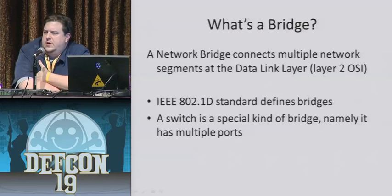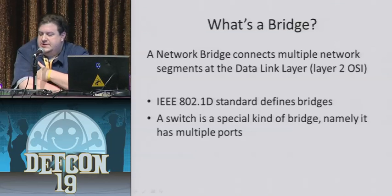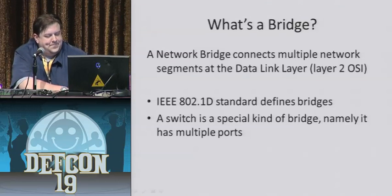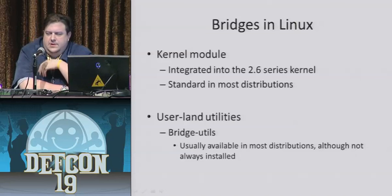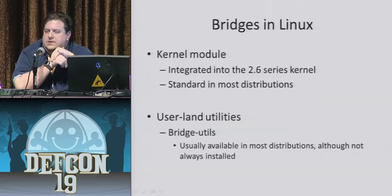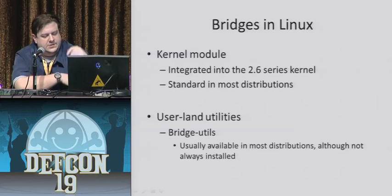So, what's a bridge? A bridge is a network device that connects multiple segments at layer 2. There's an IEEE standard, and a switch is essentially a special kind of bridge in that it has multiple ports. To use a bridge in Linux, there is a kernel module integrated into the 2.6 series, but also available for 2.4. It's standard in most distributions. There are user-land utilities to configure a bridge, available almost everywhere, though they may not be installed by default.